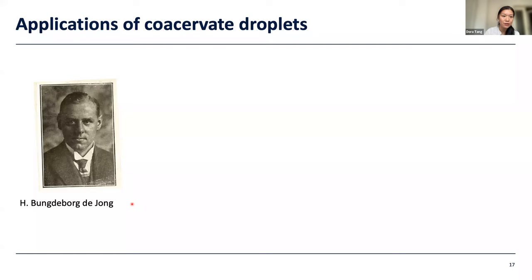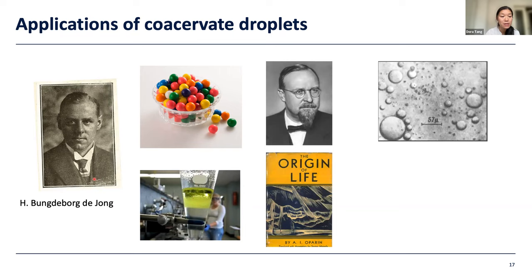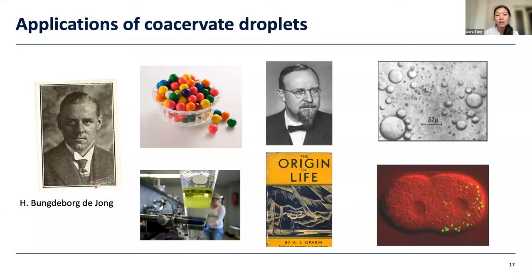Around the same time that de Jong was active, Oparin was a Russian scientist who conjectured that these coacervate droplets might have been important in the origin of life, bringing together organic molecules to generate a heterogeneous environment distinct from the outer solution — an important reaction site to kickstart the first reactions on Earth. Over the last 20 years, there's been growing acknowledgement that coacervation is a physical phenomenon which is part of the mechanism driving the phase separation of membrane-free organelles within biological systems.